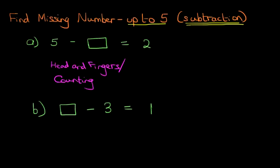If we look at the first example, we have 5 minus something equals 2. What we're doing is we are starting at 5. We need to subtract, i.e. take away a number so that it equals 2.